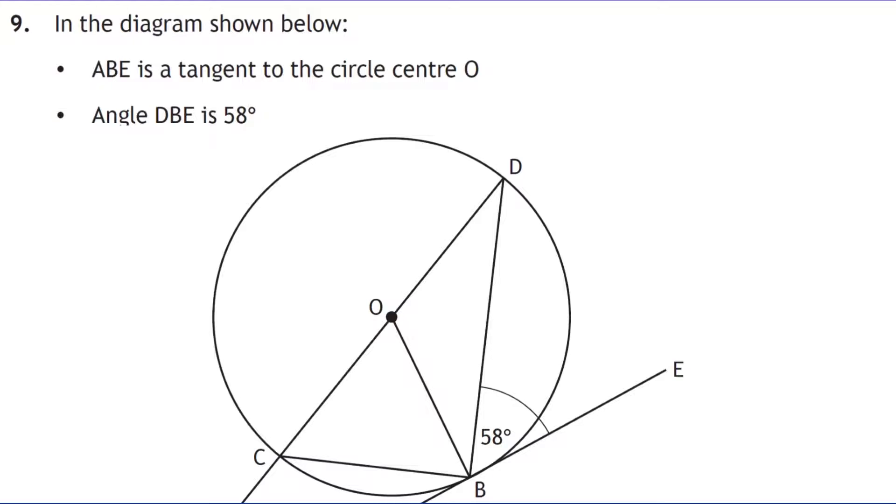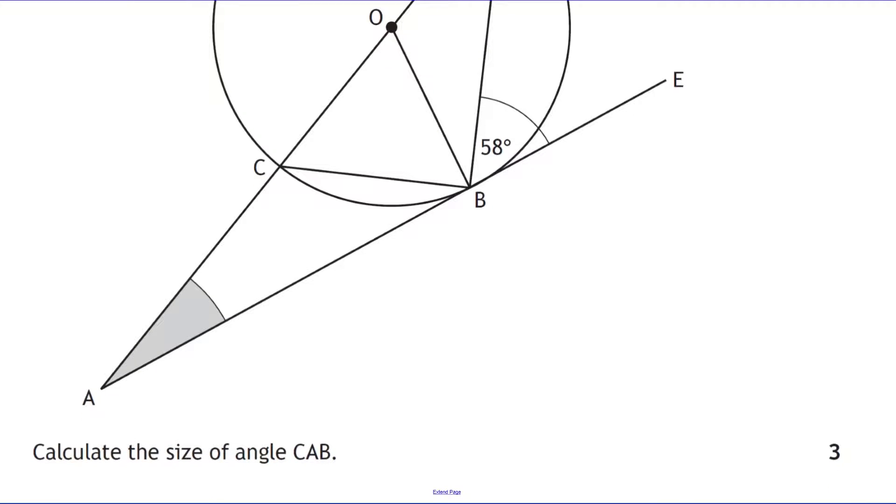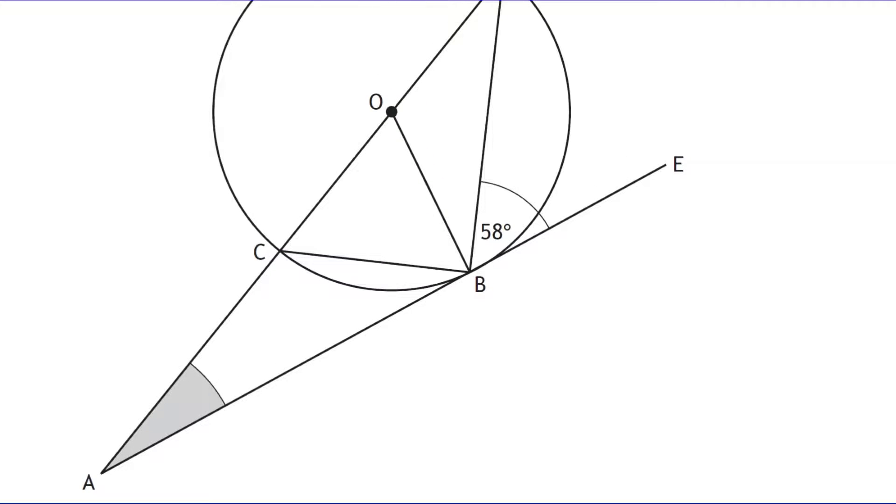Question 9. In the diagram shown below, ABE is a tangent to a circle. Angle DBE is 58 degrees. So that's the information given. Calculate the size of angle CAB. Most of these questions, the working is completed within the diagram. So use the diagram effectively. The fact that ABE is a tangent means that this radius line plus the tangent, those two intersect at a right angle. So this is a right angle here and this is a right angle here. You can see there's a full 180 degrees for the straight line altogether. Now if this is 58 degrees, that leaves 32 degrees for this angle here because those two have to add up to 90.